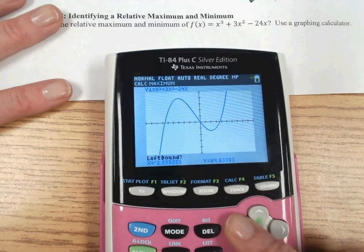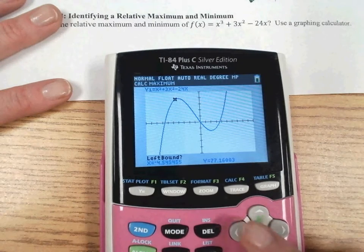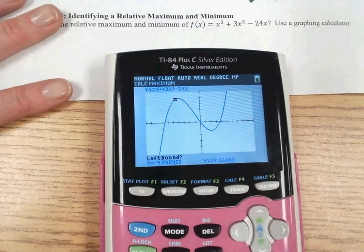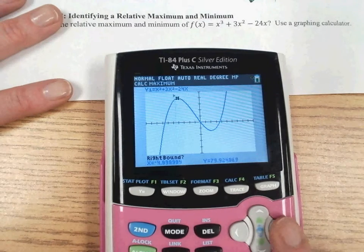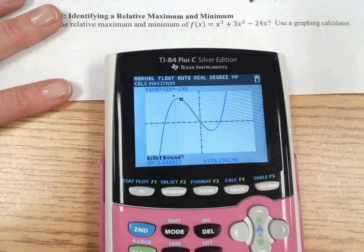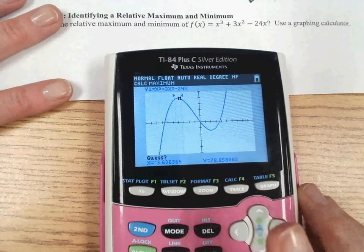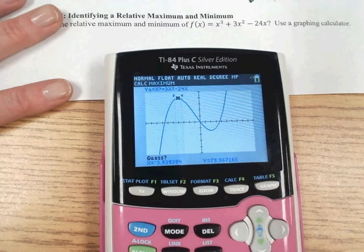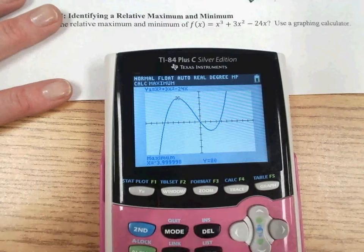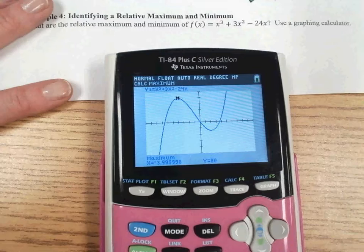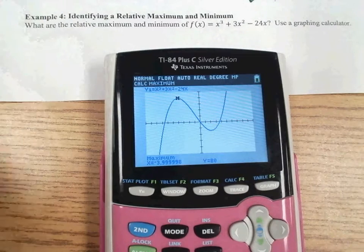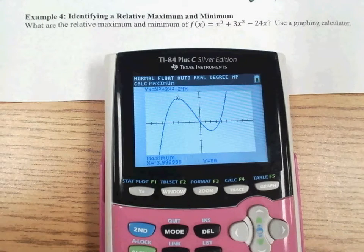And that's going to help us get as close as possible to the actual maximum value there. So left bound is where you want to go, just to the left of where you think the maximum is. And then the right bound is just to the right of where you think the maximum is. And then you want to go somewhere in between the two and hit Enter. And you'll see there is your maximum value. It says negative 3.99998 and y equals 80.